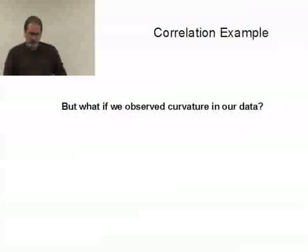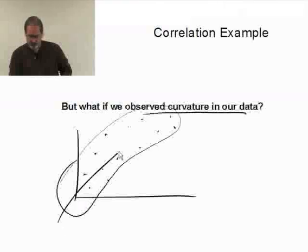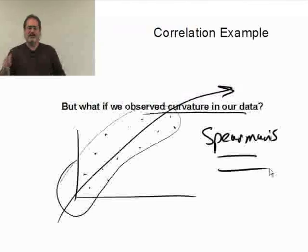Now, what's going to happen if we have a situation that we had curvature in our data? Suppose we looked at our scatter plot, and it looked more perhaps something like this, or what I'm seeing when I draw my line is something that looks curved. Well, that's exactly what Spearman's correlation was designed for, and we'll take a look at that in the next video. Thank you.